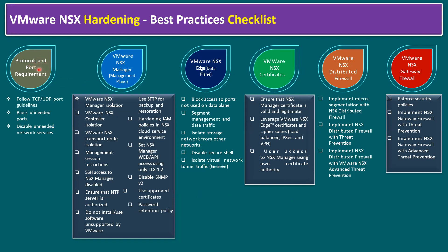Starting with protocol and port requirements: follow TCP/UDP port guidelines — TCP for wired communication and UDP for wireless communication. Block unneeded ports; in production environments keep HTTPS port 443 and recommend blocking HTTP port 80. Also disable any unused network services as part of hardening.